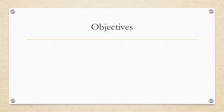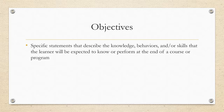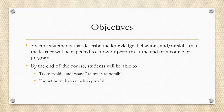Working from those goals, we want to also develop objectives. Your textbook doesn't go through objectives too much, so I'll be providing some additional resources on framing objectives. The basic idea is that objectives are specific statements describing the knowledge, behaviors, and/or skills that the learner will be expected to know or perform at the end of a course or program. Often they start with phrases like 'by the end of the course, students will be able to,' and they try to avoid the word 'understand' as much as possible.